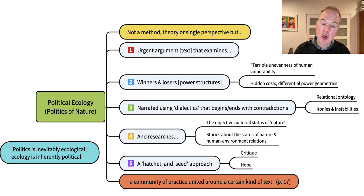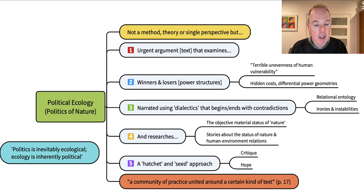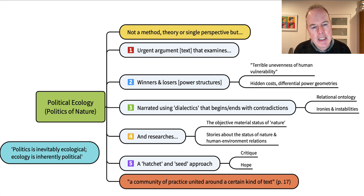Political ecology takes a hatchet and seed approach. The hatchet is its critique — seeking to uncover and expose the power structures that shape particular outcomes. But there's also the seed of making the argument that things could be different, that things do not necessarily need to be the way they are, that these structures are created by humans and can be undone by humans, even though we're now in a world very much shaped by past actions and their legacy.